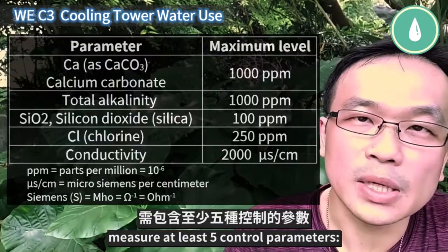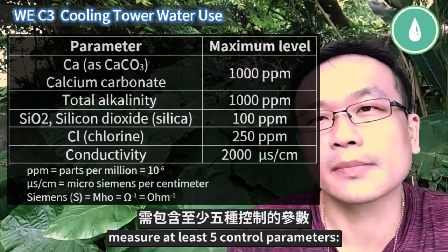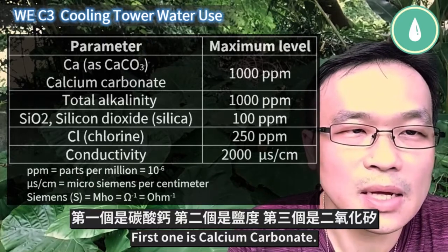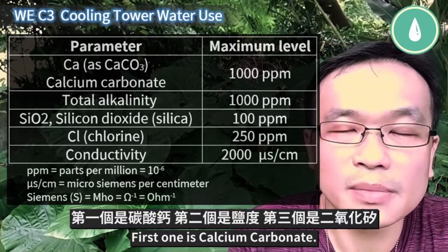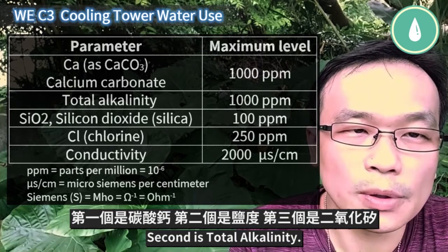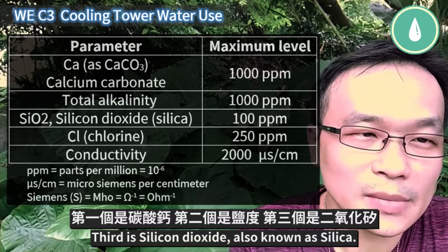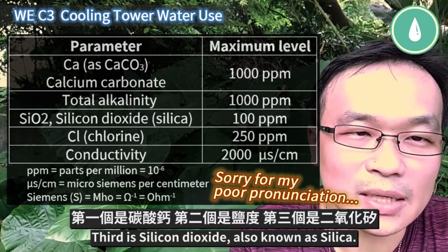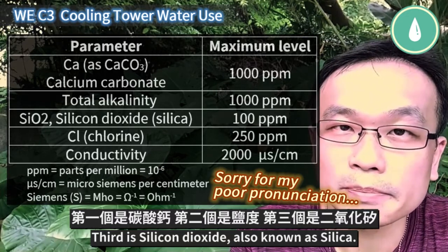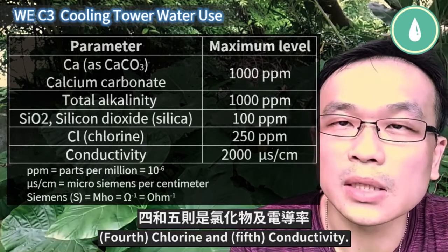You must conduct a one-time potable water analysis for cooling towers and evaporative condensers. Measure at least five control parameters: first, calcium carbonate; second, total alkalinity; third, silicon dioxide, also known as silica; and fourth, conductivity.